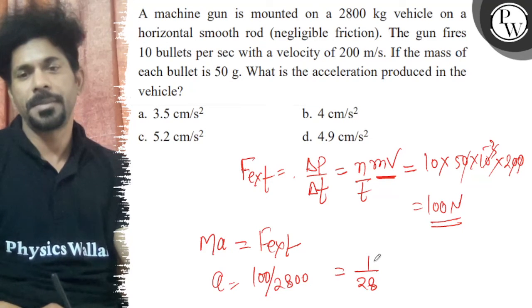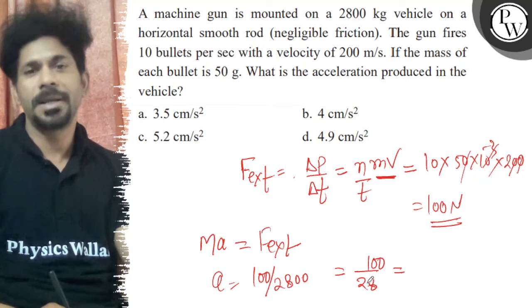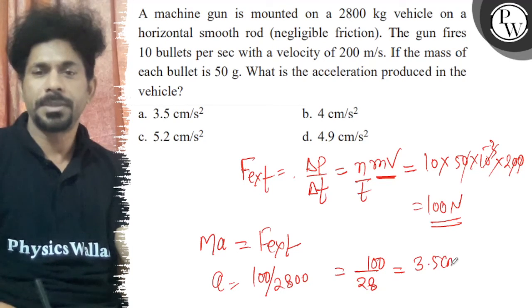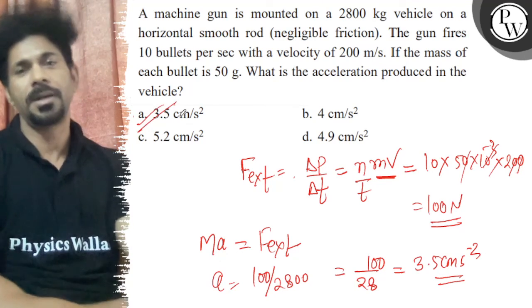Now I will do this in cm. So I will multiply by 100. So it will go 4 times. No, it will go 3 times. So 3. So it will be 3.5 cm per second square as your answer. So the right answer of this question is A and all the best.